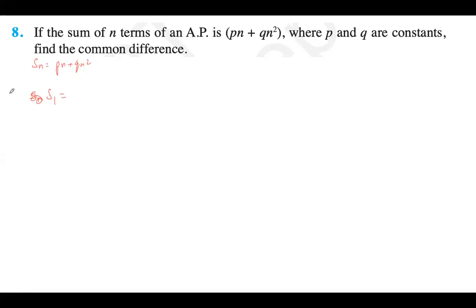S₁ is the first term, sum of 1 term. So it's P plus Q, which is P times 1 plus Q times 1 squared. Then find the second term. S₂ is a₁ plus a₂, sum of first two terms. That's P times 2 plus Q times 2 squared, which is 2P plus 4Q equals a₁ plus a₂.